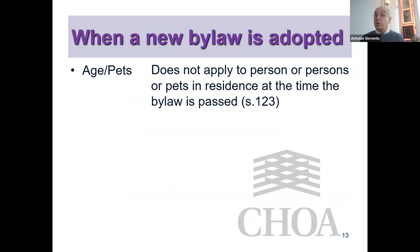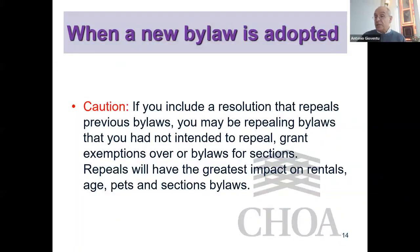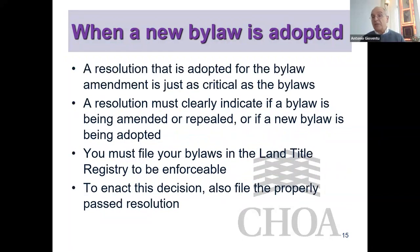Age and pet bylaws do not apply to persons or pets in residence at the time the bylaw is passed — these are what we call conditional exemptions. For example, if an owner has three dogs when a bylaw limiting to one dog is passed, those three dogs are exempt. When those pets are no longer in residence, the bylaw comes into effect for that strata lot. Be very careful: if you include a resolution that repeals previous bylaws, you might be repealing pet or age bylaws you had not intended to repeal, potentially granting exemptions all over again.